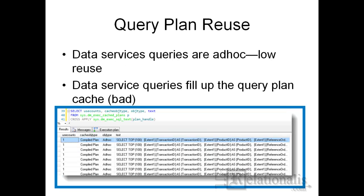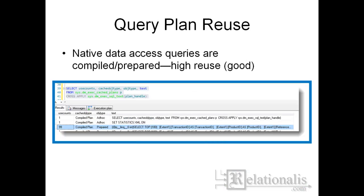The data services query creates 99 entries in the plan cache. The native client generates one plan cache entry and executes it 99 times. This is much more efficient.